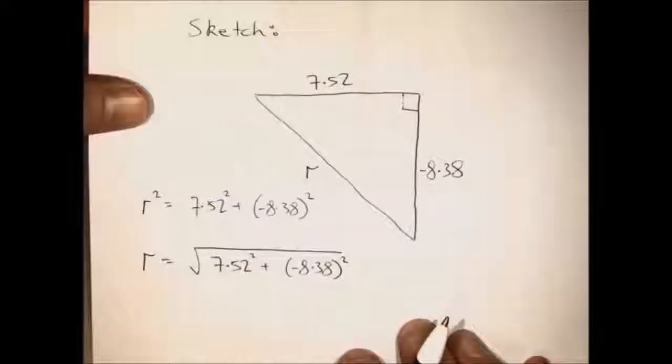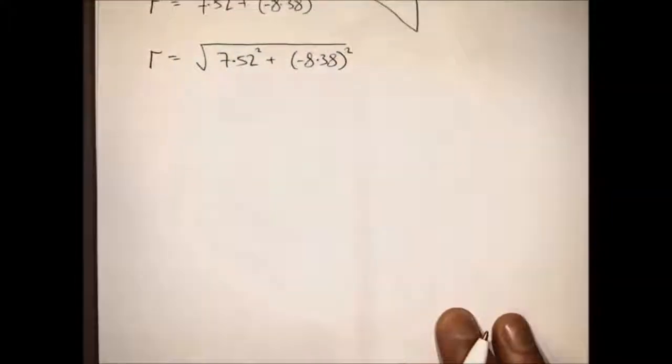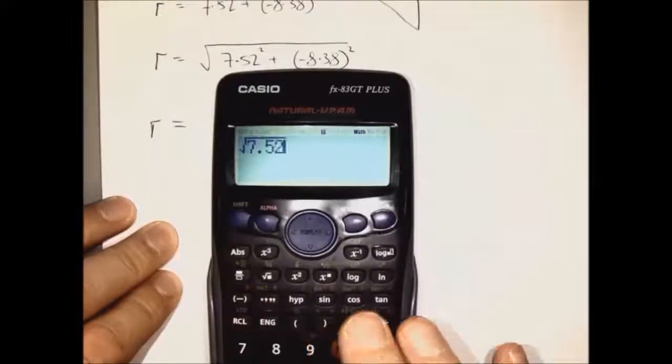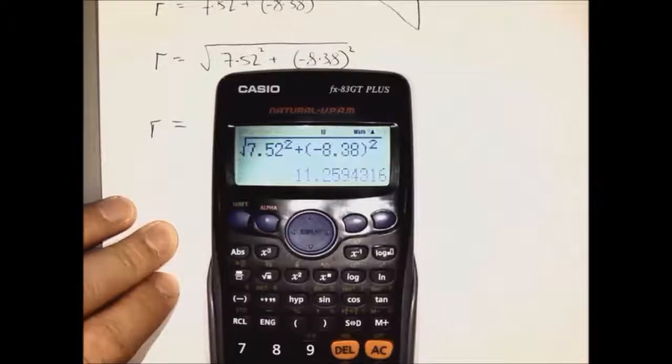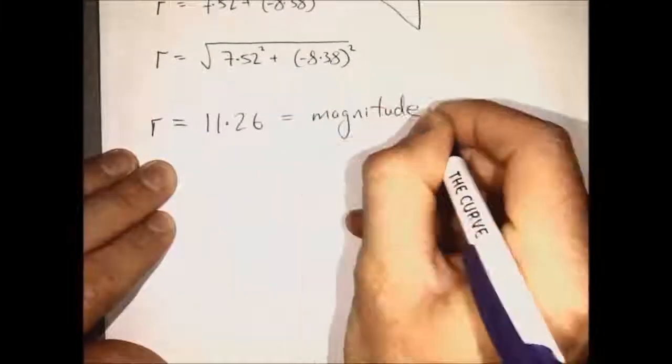So the square root of both sides there, stick in the numbers, and we get about 11.26 for the magnitude of the resultant.